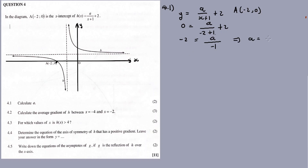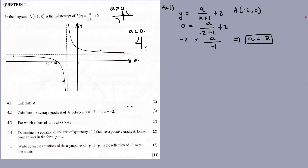A will be equal to positive 2. It makes sense that A should be a positive value. If A is greater than 0, the function will be in the first and third quadrant. If A is less than 0, the function will be in the second and fourth quadrant. So A should be a positive value.